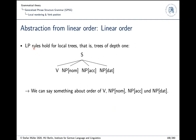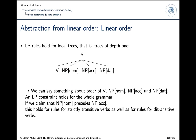The linearization rules hold for local trees — trees of depth one. It's just these elements that are ordered with respect to each other; we don't look deeper than that. Since they are in the same local environment, we can apply linearization rules to them and order things.